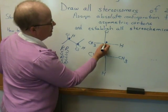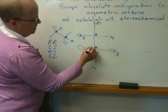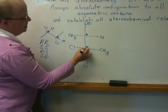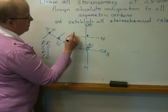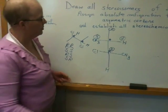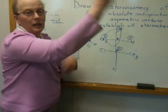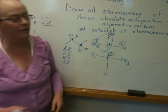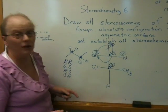So I'm going to assign this first asymmetric carbon. The number one priority group is the chlorine, because these are very simple examples. The number two priority group is the carbon that has the chlorine on it — because at the number two level it's carbon versus carbon, and this carbon has a chlorine, hydrogen, and methyl, while the other carbon has three hydrogens. So this is number two, this is number three, and hydrogen is number four. You trace the circle from one to two to three — it's going clockwise, so it looks like R. But because the hydrogen is coming out towards you, it's a wedge by definition, so you have to reverse the designation. It looks R, but it's really S.